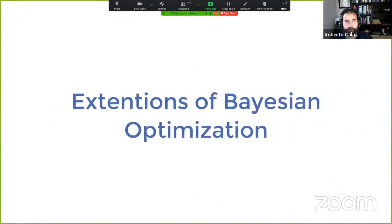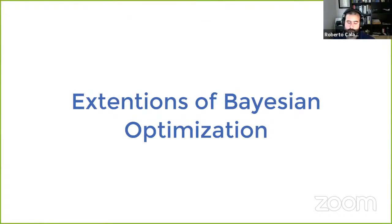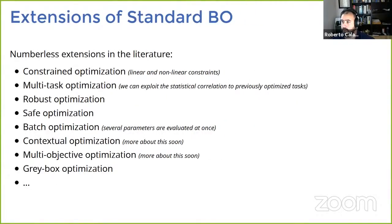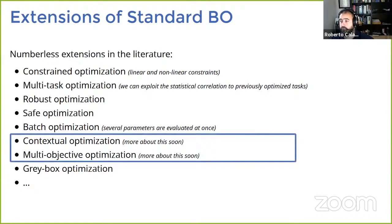Moving toward the end, there are many extensions of Bayesian optimization beyond the standard single-objective framework. These include constrained optimization, multitask extensions for correlated tasks, robust optimization, safe optimization, and batch optimization where you can sample several points at the same time — for example if you have multiple robots. I want to quickly point out two extensions that are very useful in the real world: contextual optimization and multi-objective optimization.